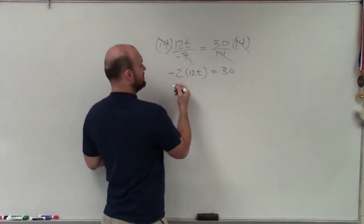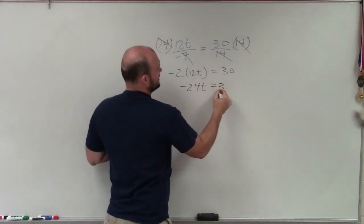Just multiply by your LCD on both sides. Therefore, I have negative 24t equals 30.